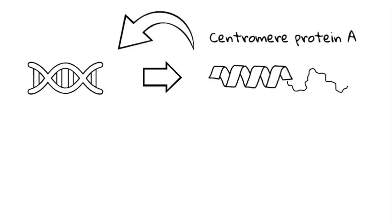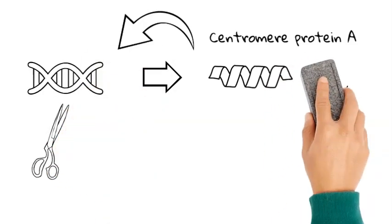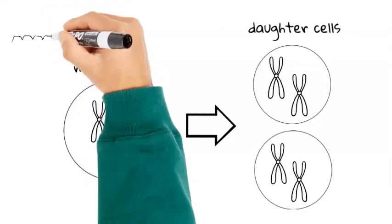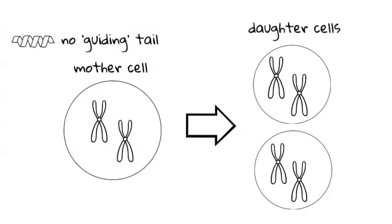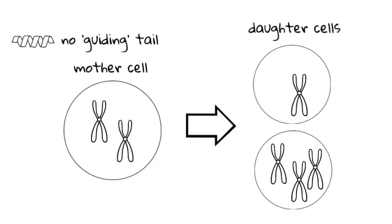We decided to study this protein tail in the worm because we can easily sabotage it. We used a genetic technique to erase the tail region. What we expected to see was that removing this guiding tail would prevent the protein from finding its right location. This would then lead to the incorrect separation of the DNA during cell division, or in other words, the eggs would stop developing into worms.